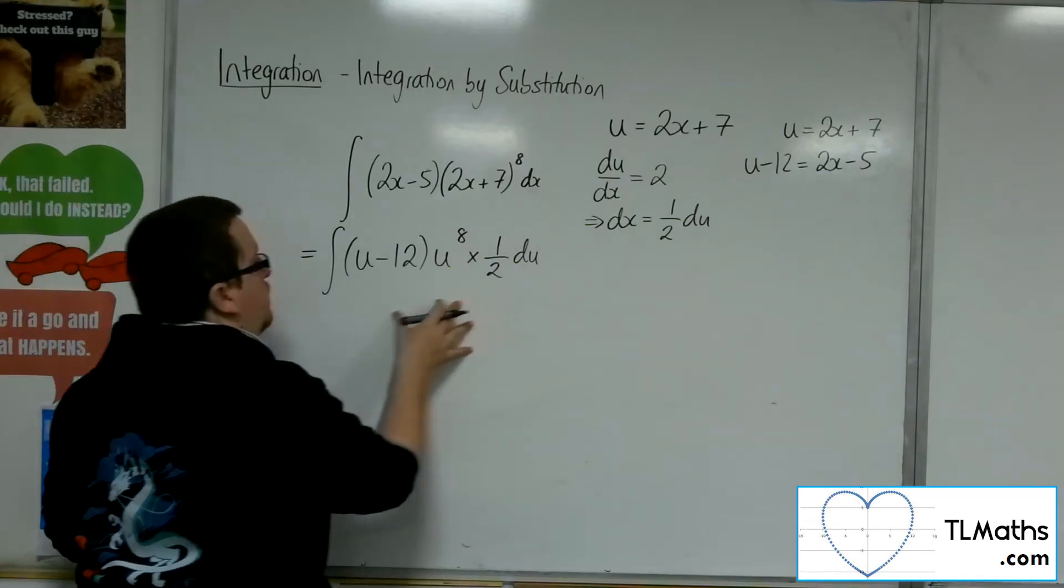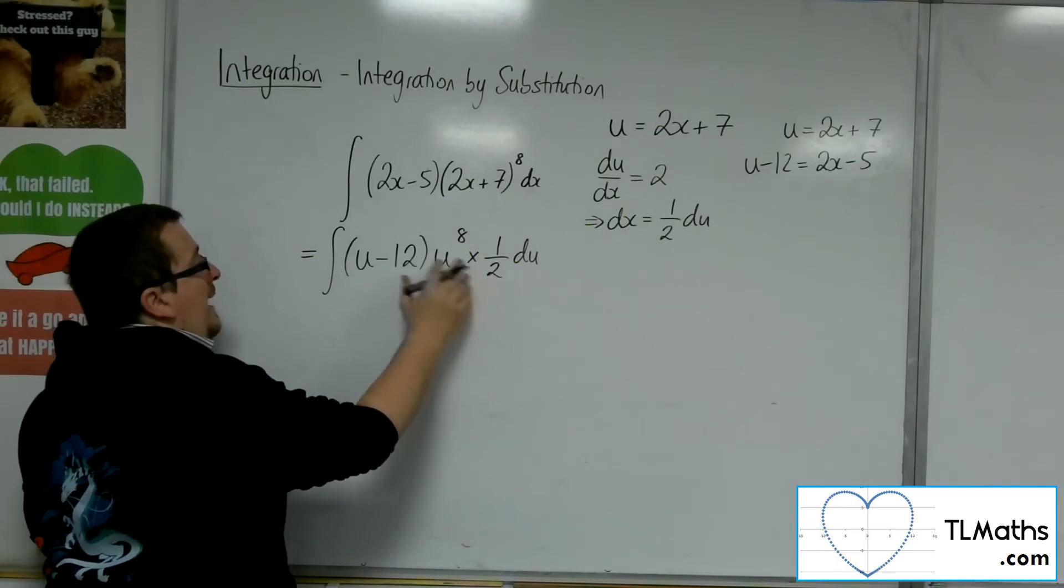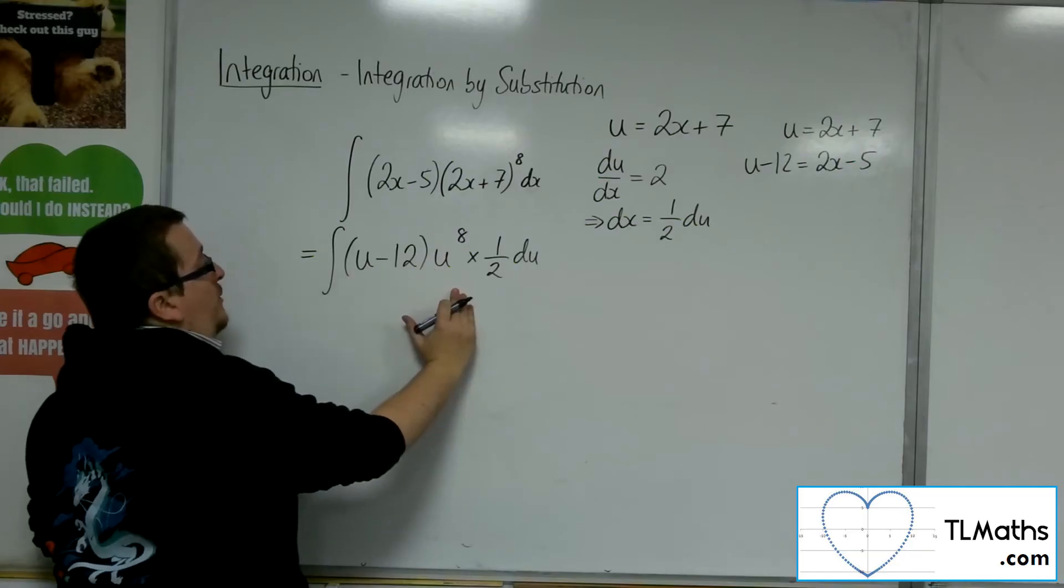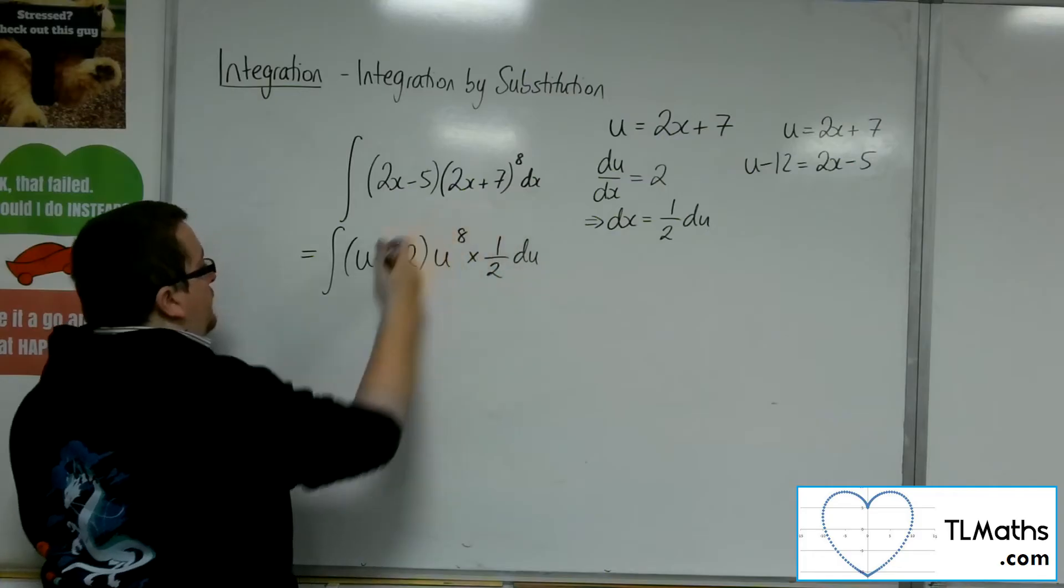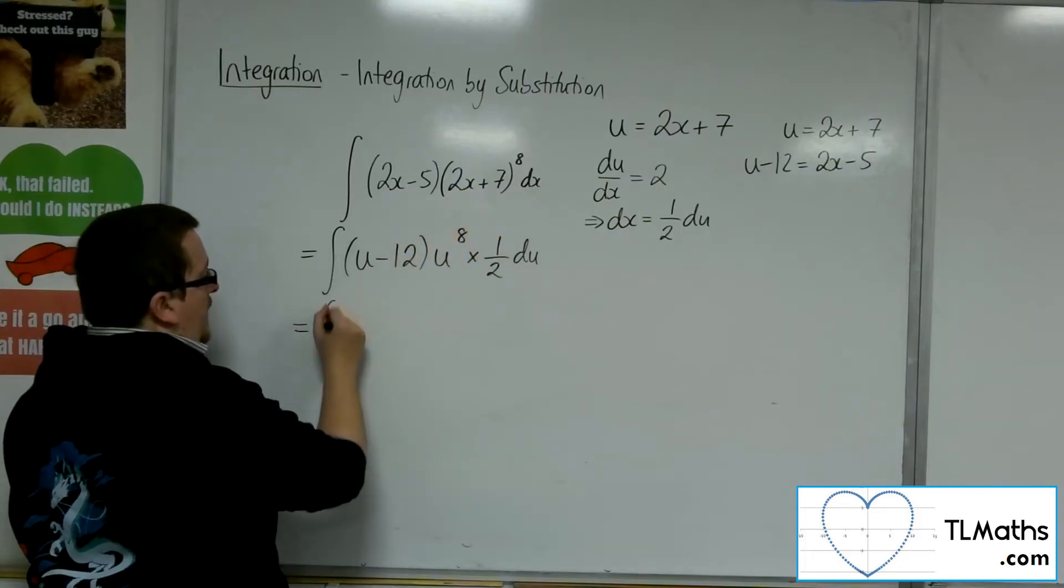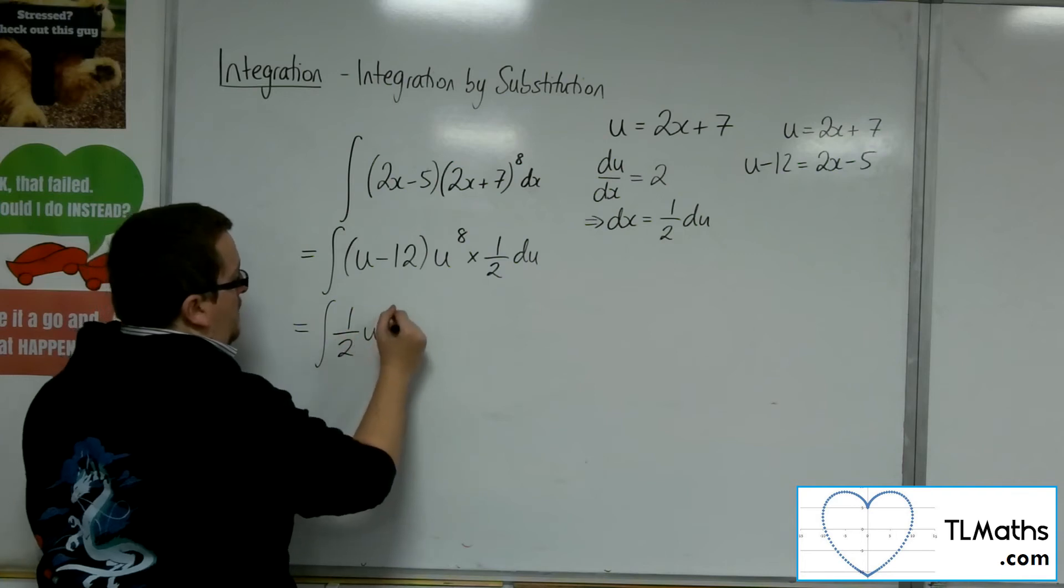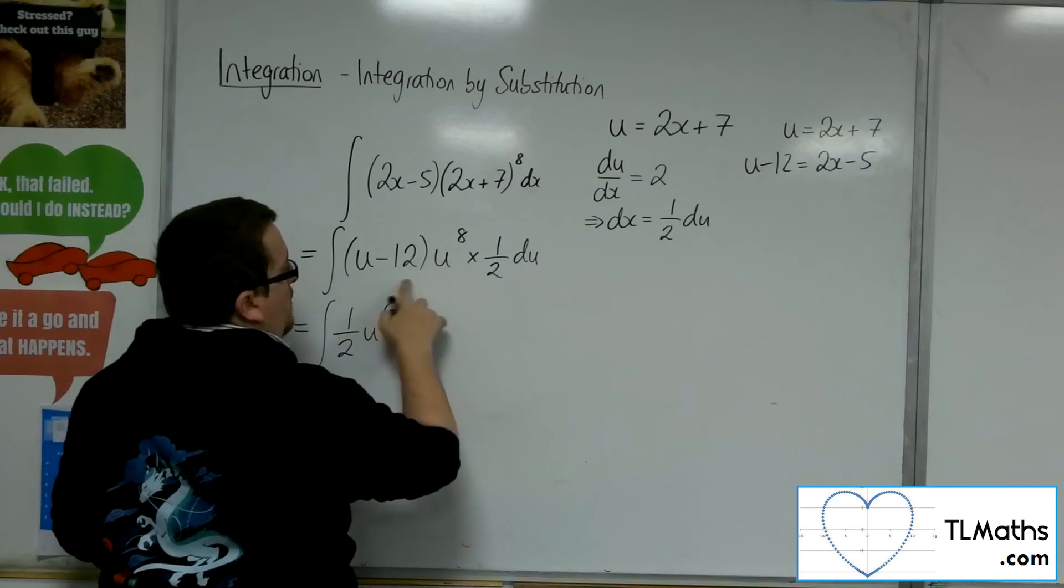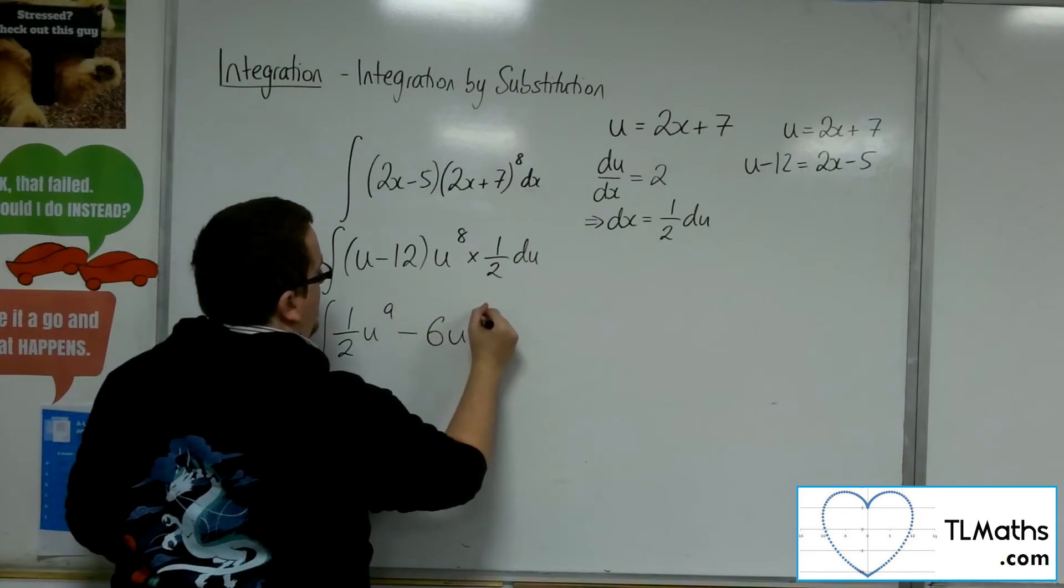I can now multiply through by the 1/2 and by the u to the 8, because that is much easier to expand. So I've got 1/2 u to the power of 9, then minus 12 times 1/2, so minus 6 u to the 8 du.